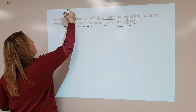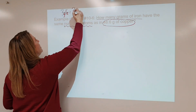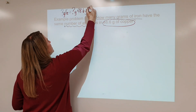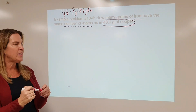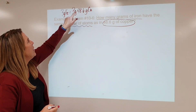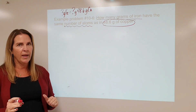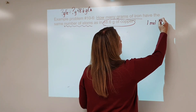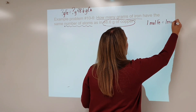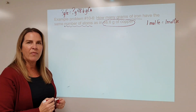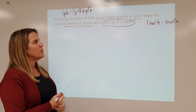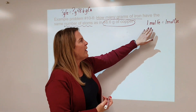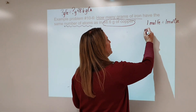We want to know grams of iron that have the same number of atoms as 48.6 grams of copper. Grams of copper and grams of iron are not the same. But do we understand something about moles? One mole of iron and one mole of copper — what do they have in common? One mole of iron and one mole of copper both have the same number of particles.